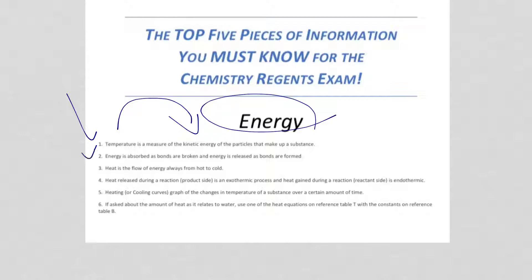For the second one, energy is absorbed as bonds are broken, energy is released as bonds are formed. In a balanced equation you have both - bonds being broken and bonds being formed. But what New York State likes to do is give you one step. For example, you might have two oxygen atoms and together they're forming O2. When bonds are formed, energy is released, making it exothermic.